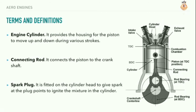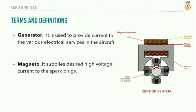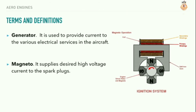Connecting rod: it connects the piston to the crankshaft. Spark plug: it is fitted on the cylinder head to give a spark at the plug points to ignite the mixture in the cylinder. Carburetor: it supplies the correct mixture of petrol and air to the engine. Fuel pump: it sends the fuel to the carburetor under positive pressure. Oil pump: it ensures positive lubrication of the engine. Generator: it is used to provide current to the various electrical services in the aircraft. Magneto: it supplies the desired high voltage current to the spark plugs.